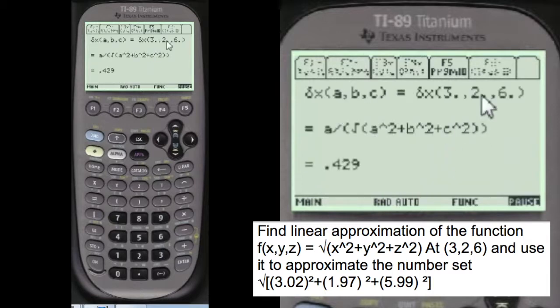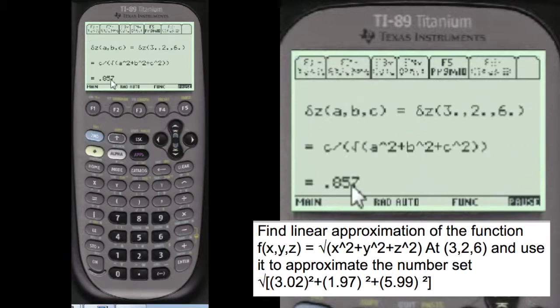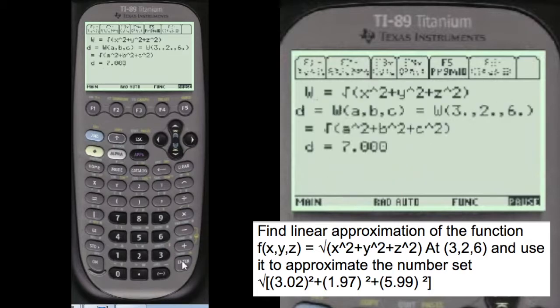And at 326 equals 0.429. Partial of y at 326 is 0.286. Partial of z at 326 is 0.857. And the actual function at 326 is 7.